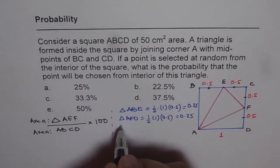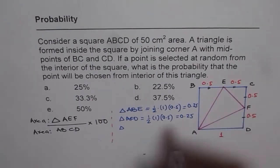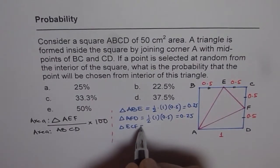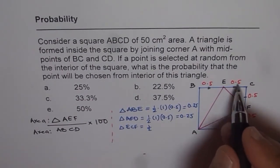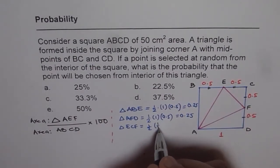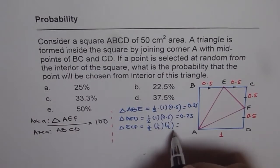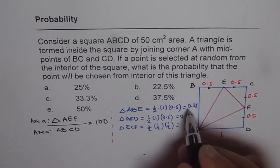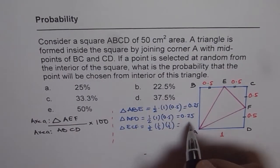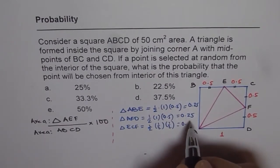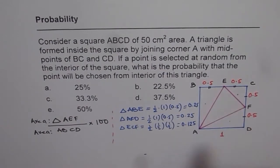How about area of triangle ECF? That is half of 0.5, 0.5. You could have written half of half of half, or 1 over 8. So these are 1 fourths and this is 1 over 8. Half of 0.25, which is 0.125. So these are the three areas.